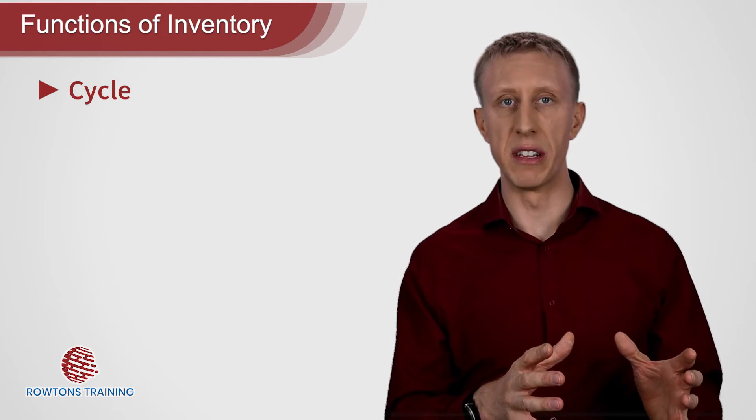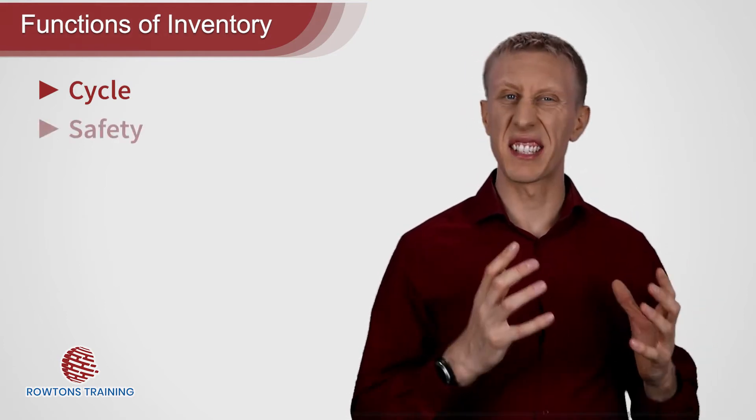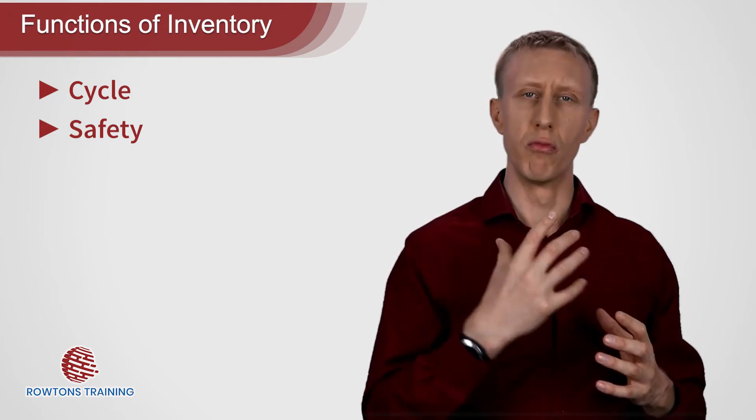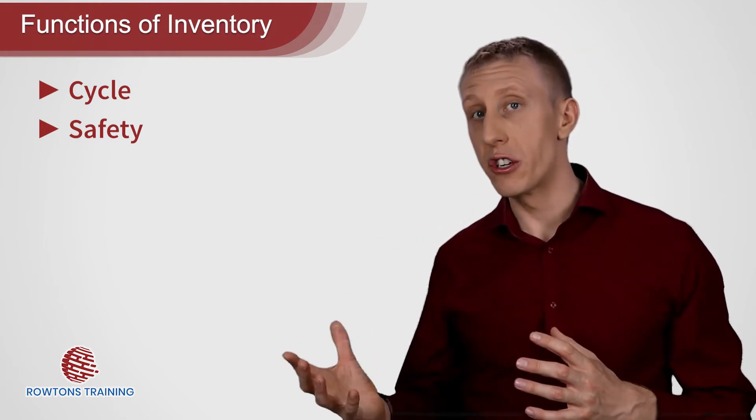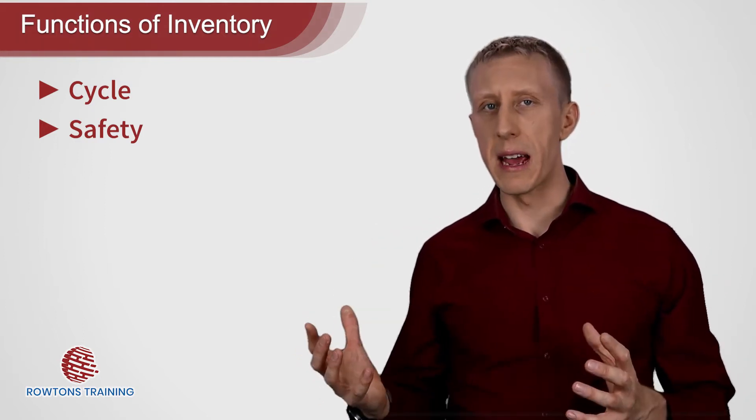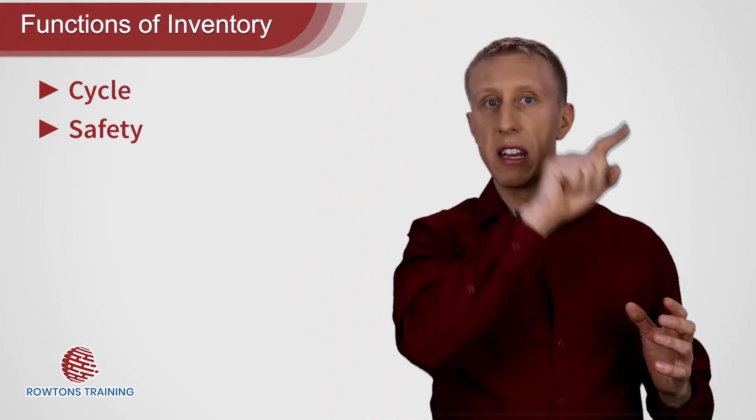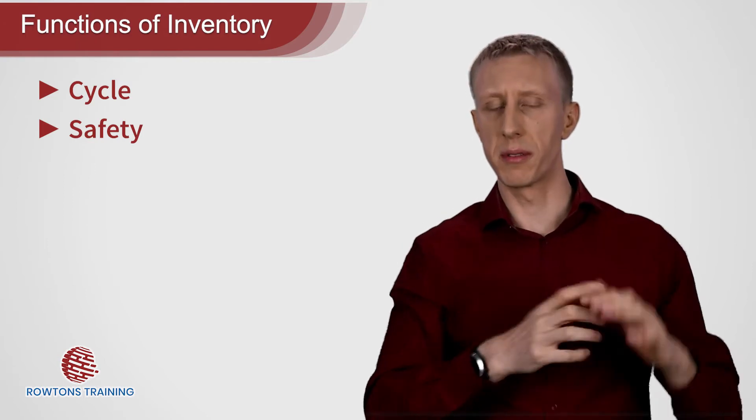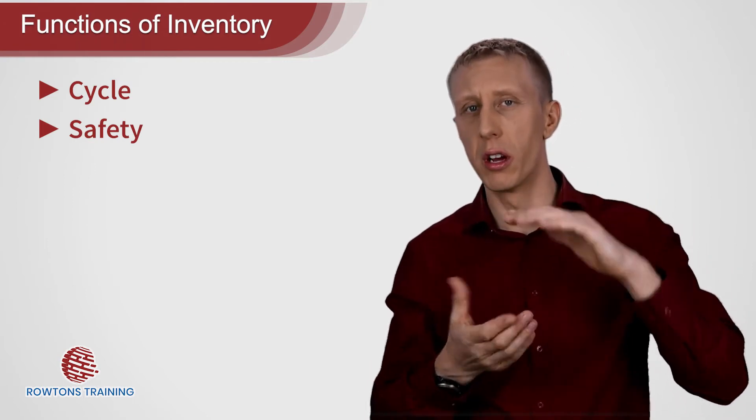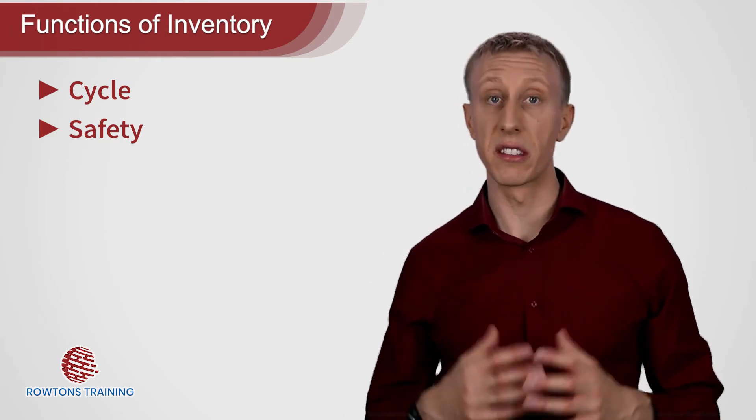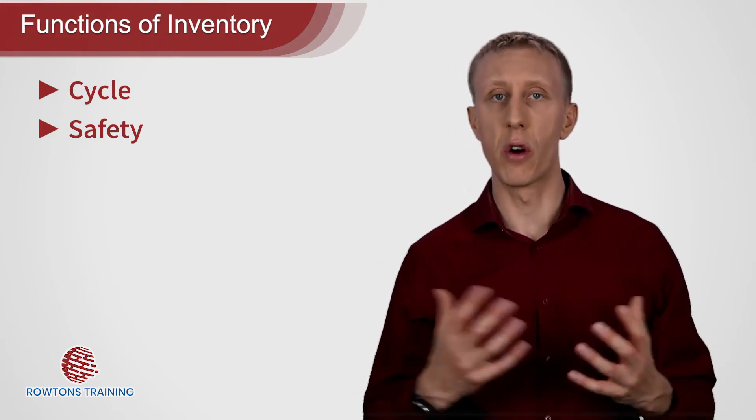The next category is safety inventory or safety stock. This is typically raw materials or finished goods inventory, and it's kept as extra to what we need in our daily or monthly cycle of consumption and replenishment. It's kept as extra stock to protect us from uncertainty and variation in the supply and demand of our stuff.